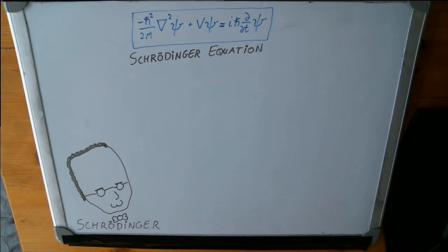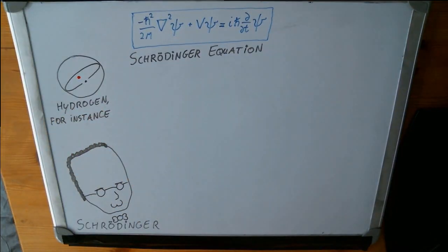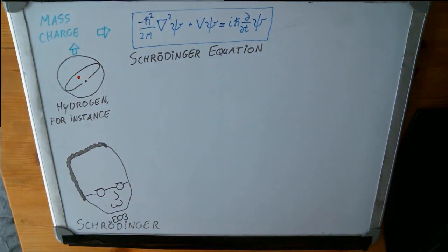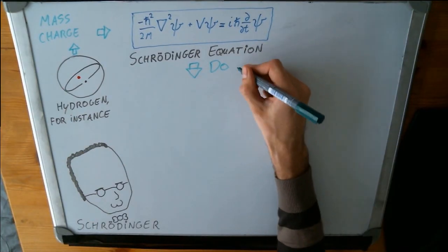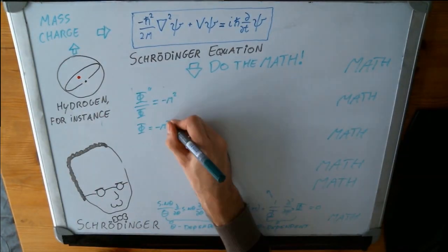Schrödinger realized that with this equation, he was in a very interesting position. He could take an atom—any atom—take its properties like mass and charge, all those numbers, put them in the equation, do the math, and what he would end up with would be a series of pictures that showed what that atom looks like.